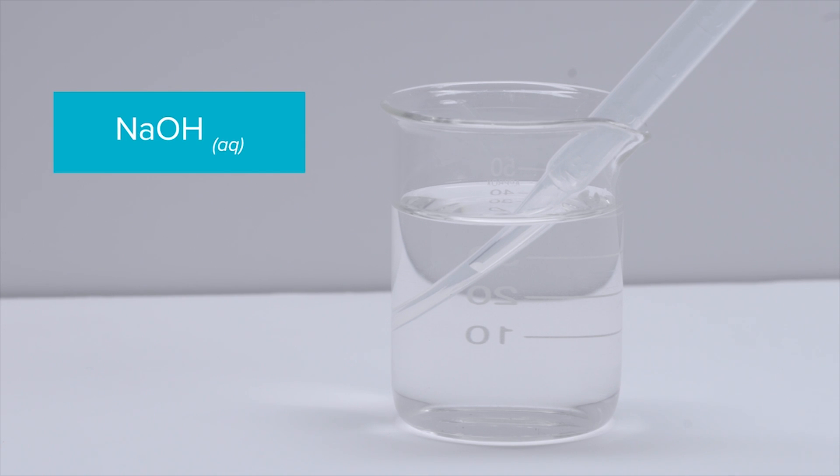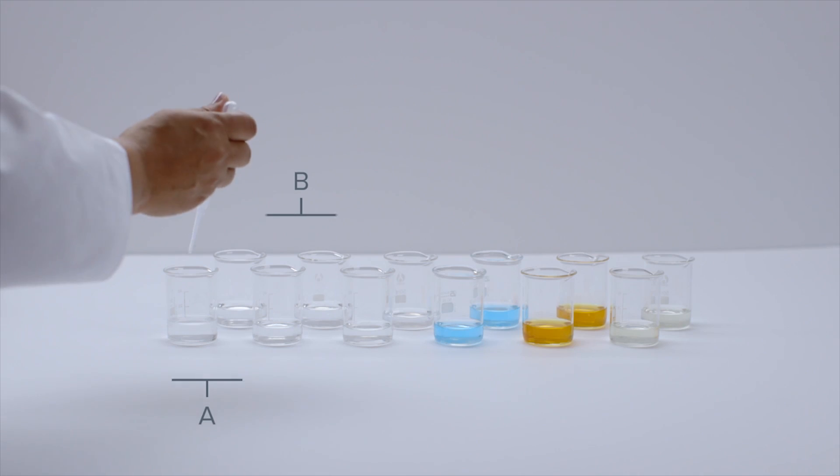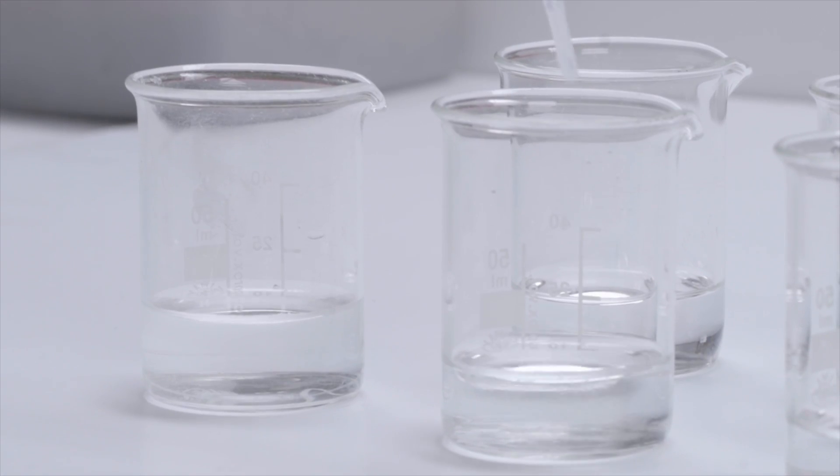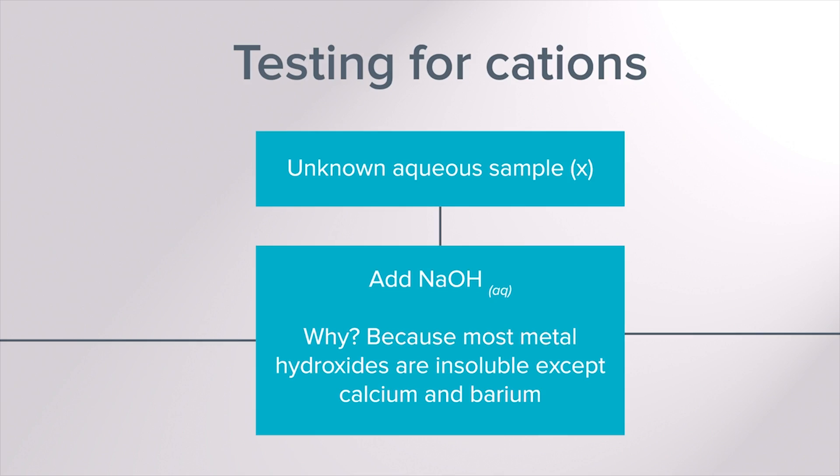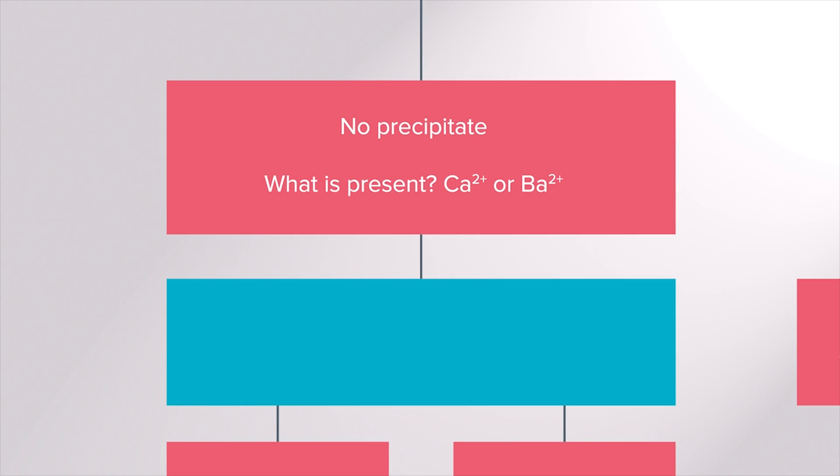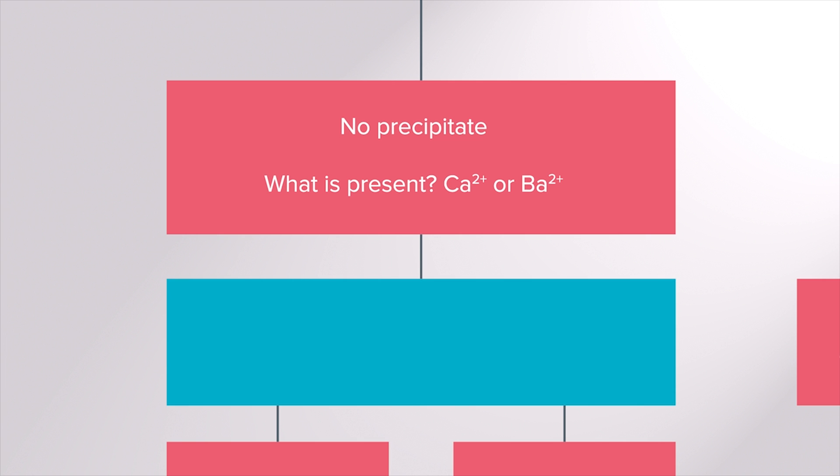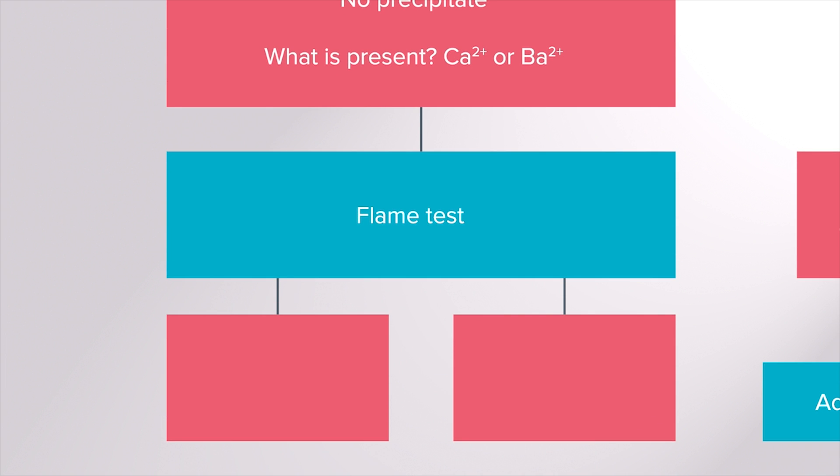Sodium hydroxide is firstly added to the aqueous sample containing the ion or ions. This is added first as most metal hydroxides are insoluble except calcium and barium. So if a precipitate does not form we can assume calcium or barium ions are present and then perform a flame test using a fresh sample.